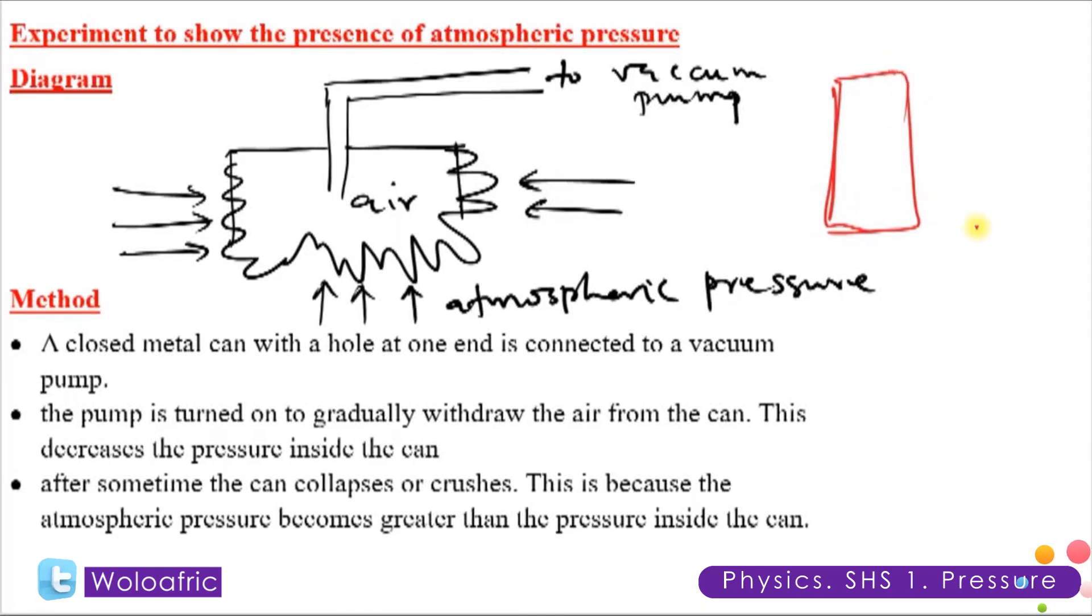We want to talk about an experiment to show the presence of atmospheric pressure. One thing you need to take note is this: once you have a container, the shape of the container is a result of the atmospheric pressure acting on the container or the air in the container. Once you have air in the container, the particles of the air will exert pressure on the container and that will give it its shape.